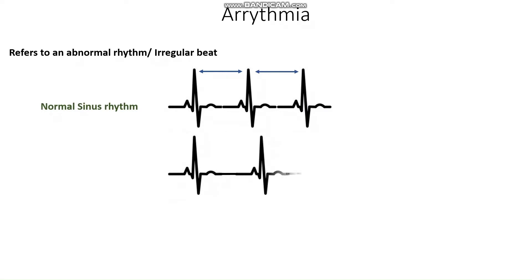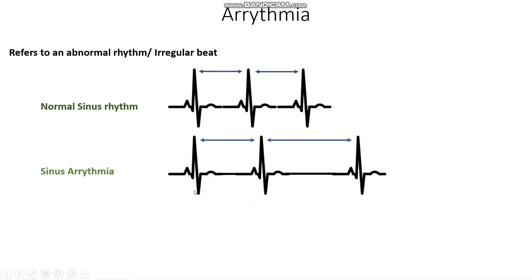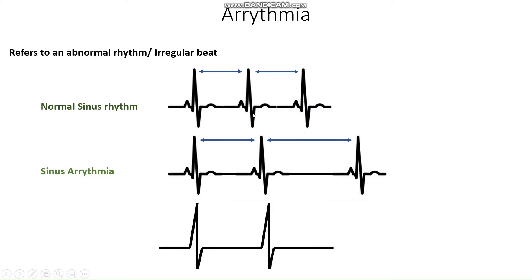We may have a strip that looks like this, where we can see P waves and that it's going down the normal conductive pathway of the heart, but the complexes are not evenly spaced apart — this is a sinus arrhythmia. And lastly, we may have a strip where we have no P waves, and thus this is a non-sinus arrhythmia.